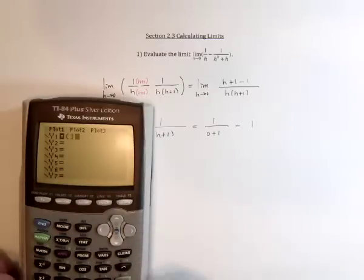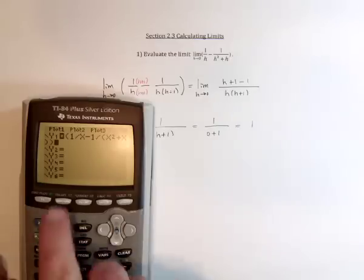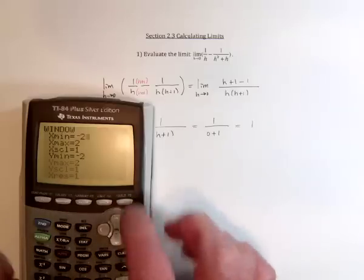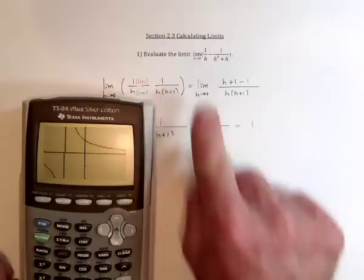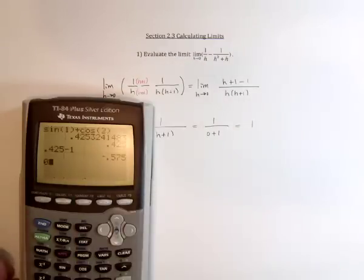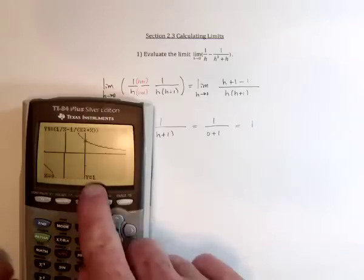So graph 1 divided by x minus 1 divided by x squared plus x. And then I need this to be close to 0. So negative 2 to 2. And then take a look at the graph. And as the h is close to 0, so at 0, the function is undefined. But if it's close to 0, it's very close to 1.